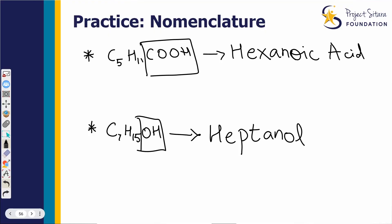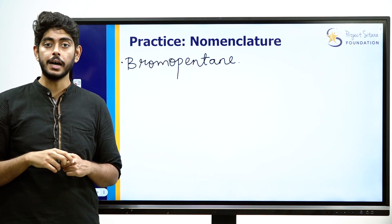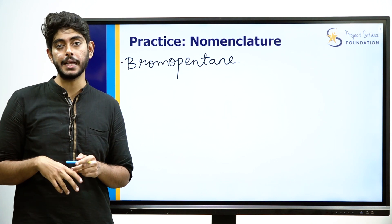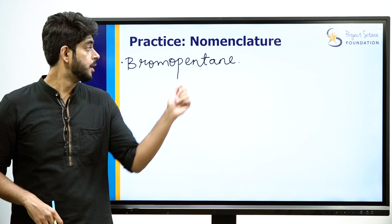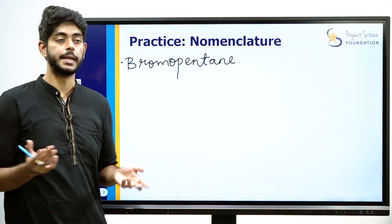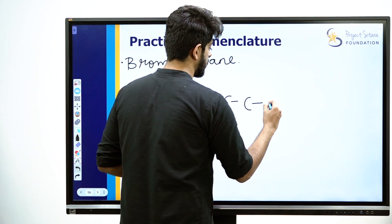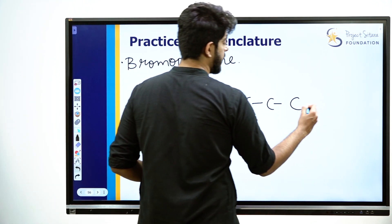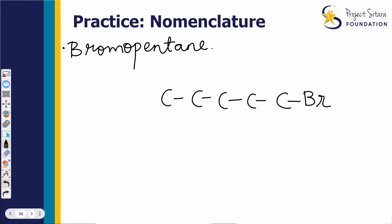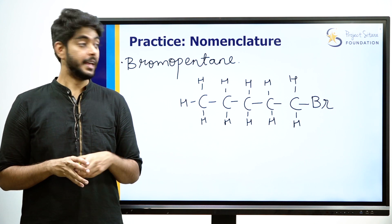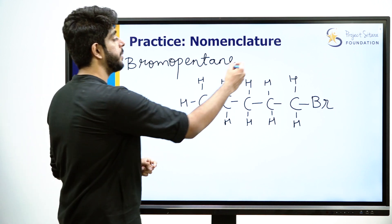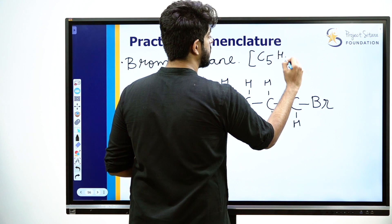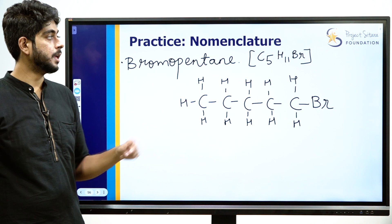This is how we do nomenclature. Sometimes questions give you the name and ask you to draw the structure — the reverse process. For example, bromopentane: 'bromo' indicates a halogen functional group — bromine. 'Pentane' means 5 carbon atoms. Draw 5 carbon atoms (1-2-3-4-5), then add bromine (Br) as the functional group prefix, and fill remaining bonds with hydrogen. The formula for bromopentane is C5H11Br.